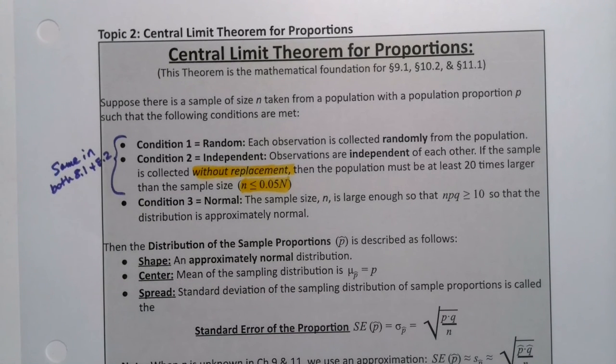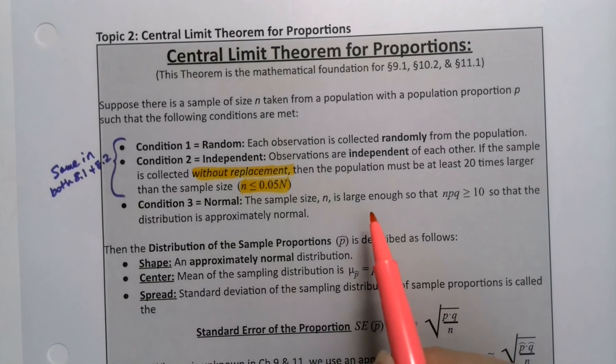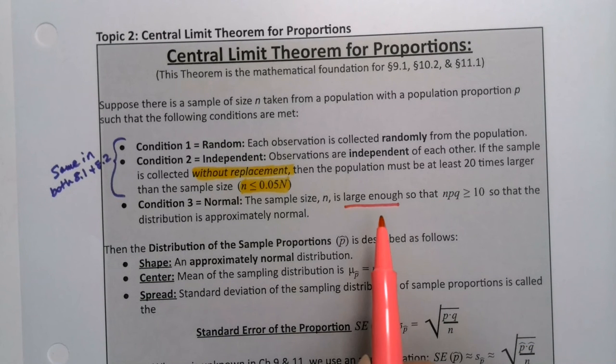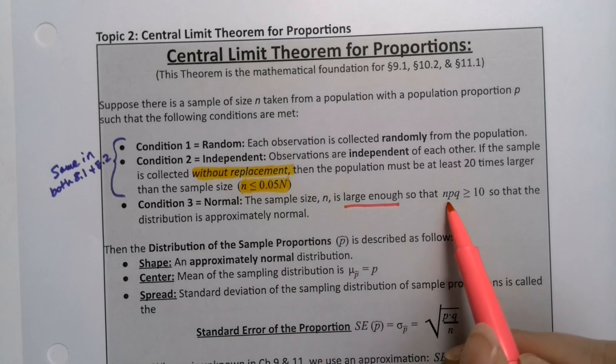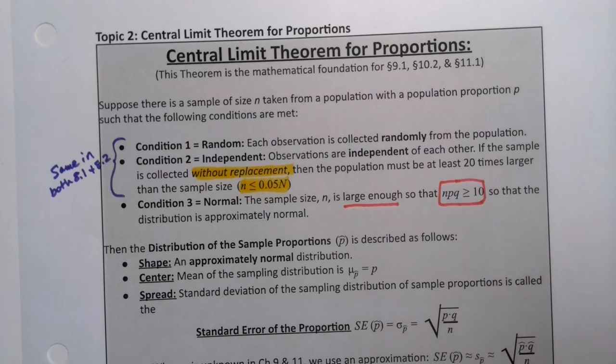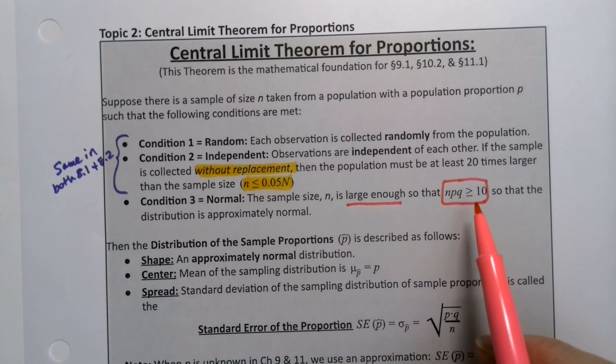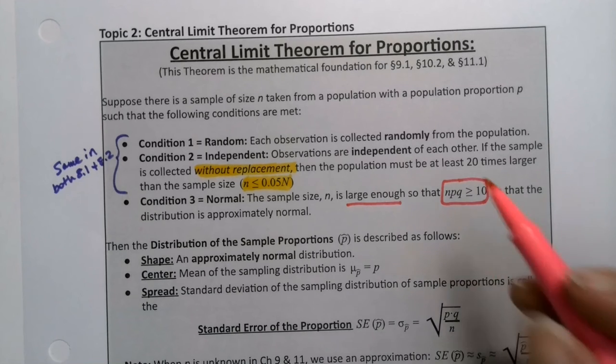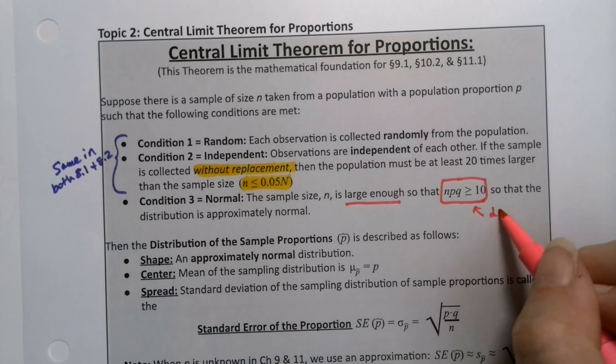What's different is condition 3. We need the sample size to be large enough, but large enough is no longer 30. What we need is NPQ to be greater than or equal to 10. And of course, Q is 1 minus P. We learned that in chapter 6. So NPQ must be bigger than 10. If that's the case, then we're large enough, quote unquote. That is different from 8.1.